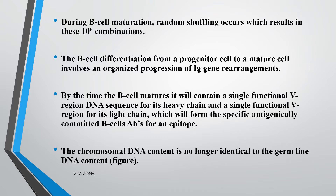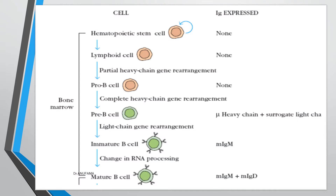B cell differentiation starts from a progenitor cell to a mature cell and involves an organized progression of immunoglobulin gene rearrangements. By the time the B cell matures, it will contain a full functional V region DNA sequence for its heavy chain and a single functional V region for its light chain, which forms the specific antigenically committed B cell. The chromosomal DNA content is no longer identical to the germline DNA content.